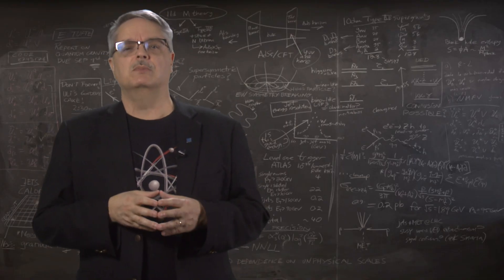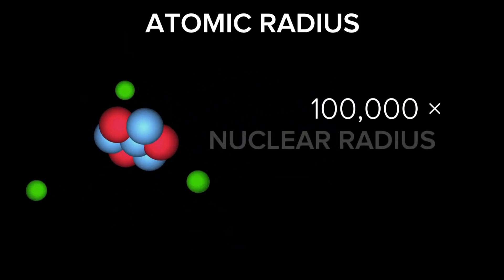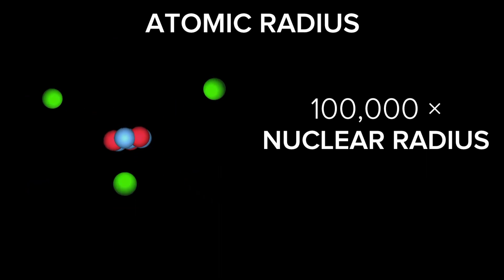Tossing around some numbers, an atom is about a hundred thousand times larger than its nucleus. This means we can think of the nucleus as a tiny core with very tiny electrons orbiting in a huge volume around the nucleus.